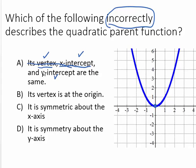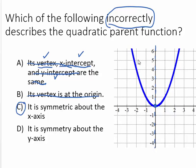So A is not the answer choice, because they want us to find the incorrect description. B says its vertex is at the origin — so B is also a correct description. C says it is symmetric about the x-axis. Well, the y-axis is the axis of symmetry, not the x-axis, so C looks like it might be the answer. D says it's symmetric about the y-axis, and it is symmetric about the y-axis because the left-hand side of the parabola is the same as the right-hand side — mirror images across the y-axis. So D is correct, which means C is the only incorrect description of the quadratic.